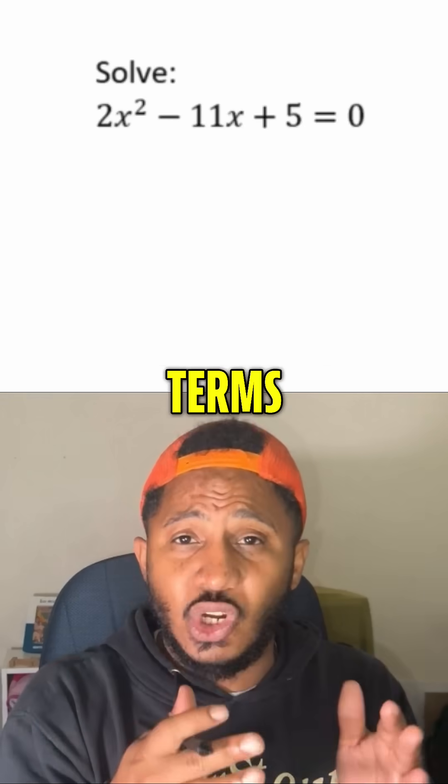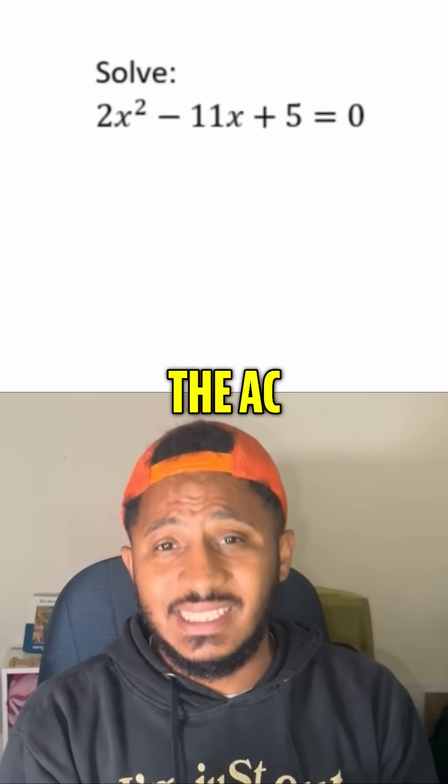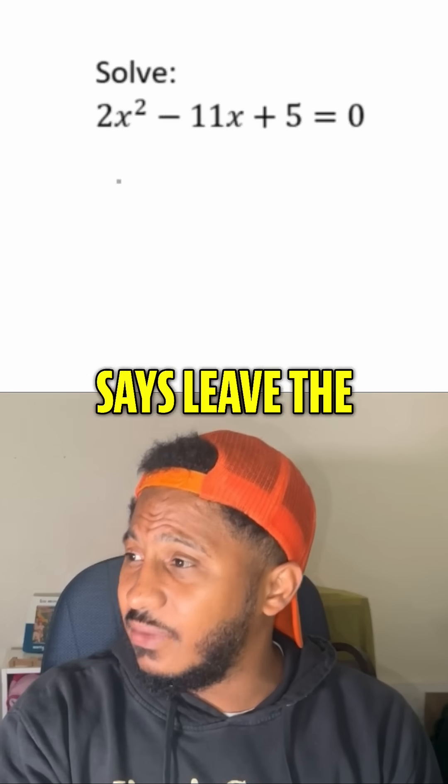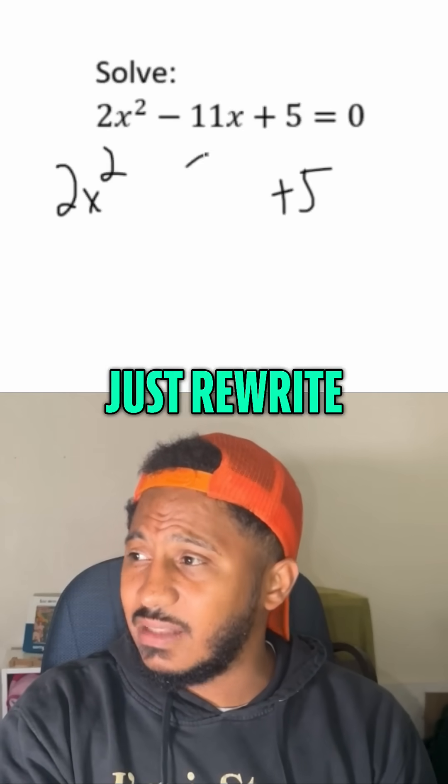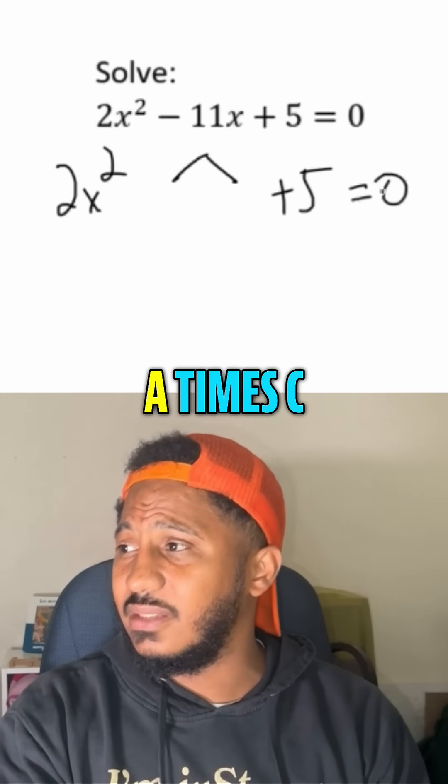Now, because there's three terms and there's not a one in front, then we try using what's called the AC method, okay? So the AC method says leave the first term as it is, leave the last term as it is, just rewrite the middle term using factors of A times C.